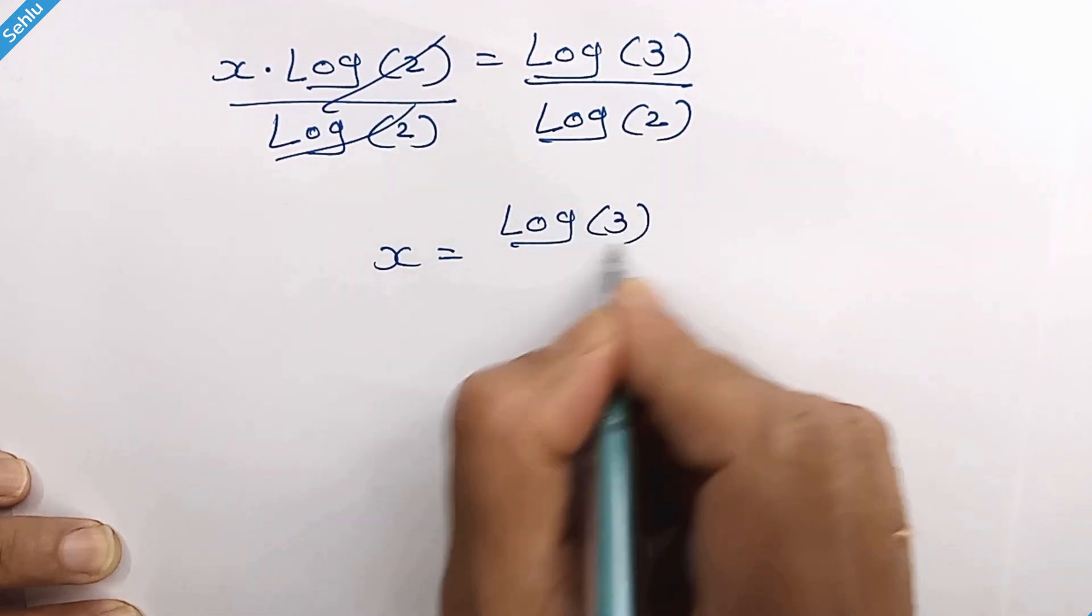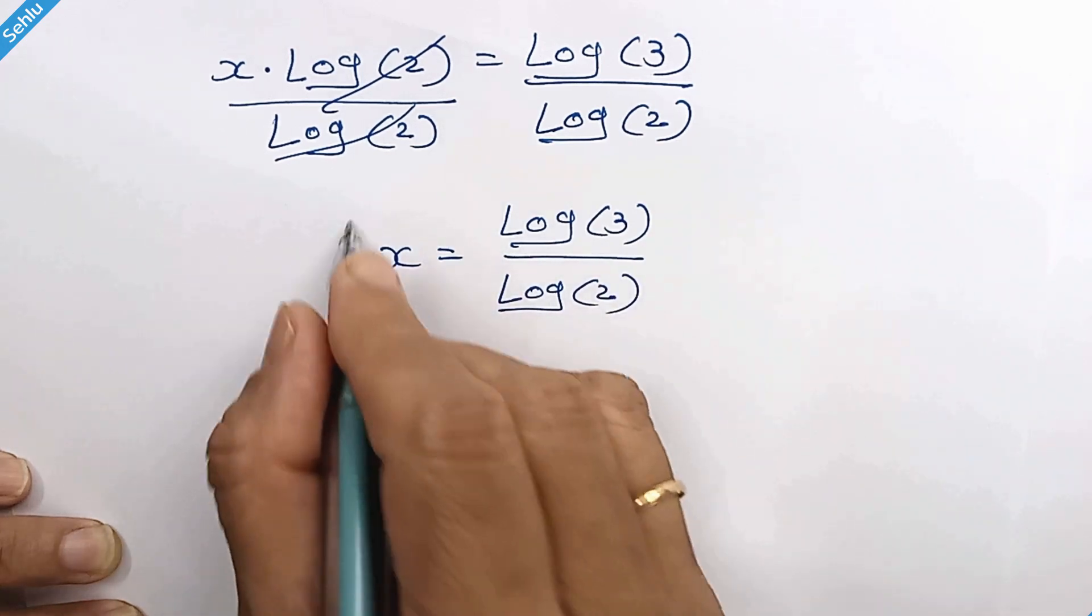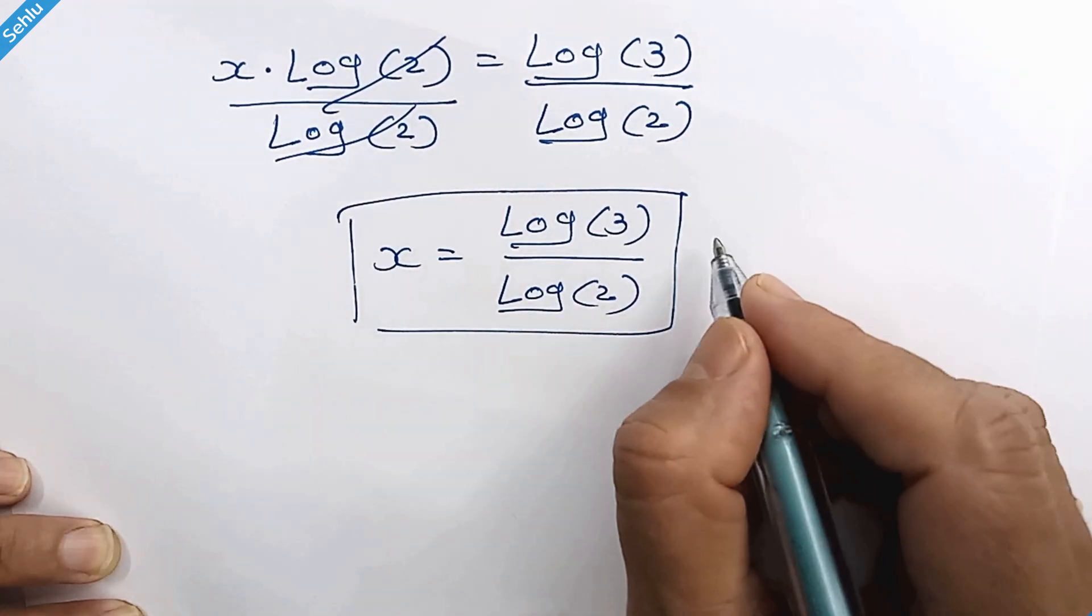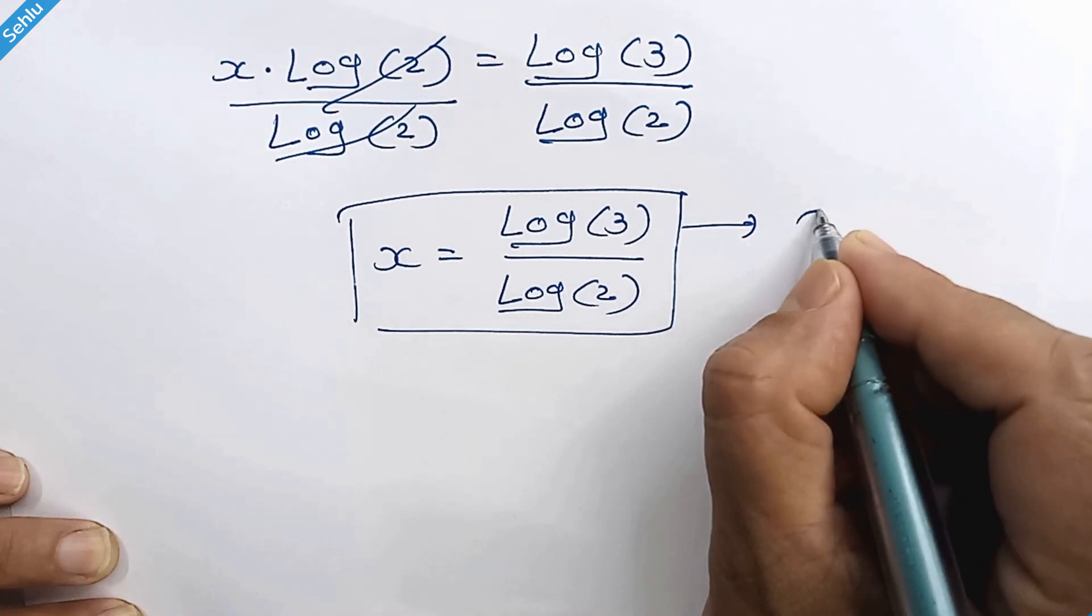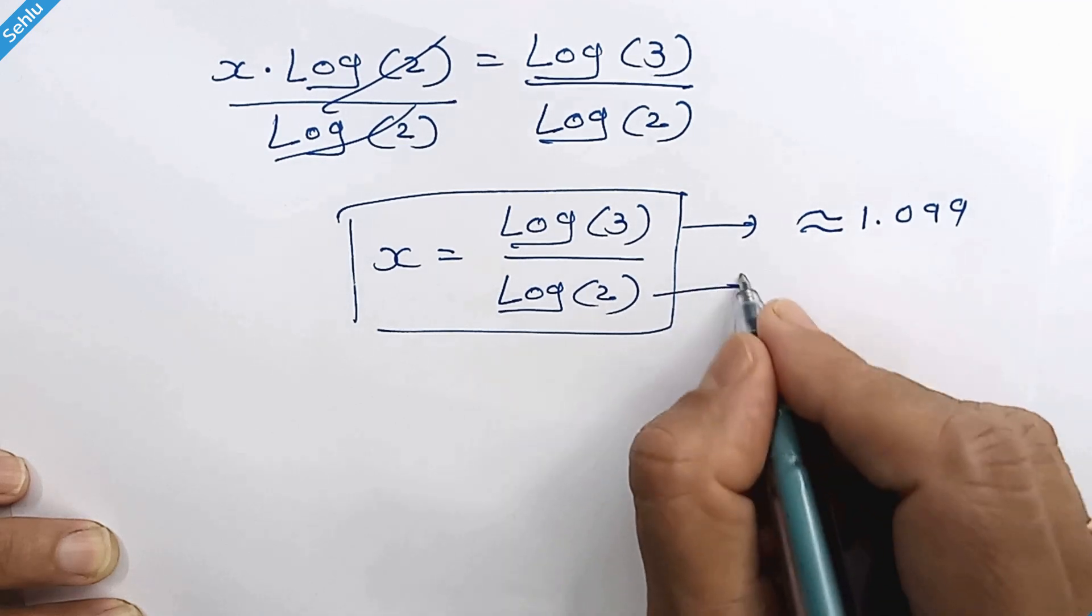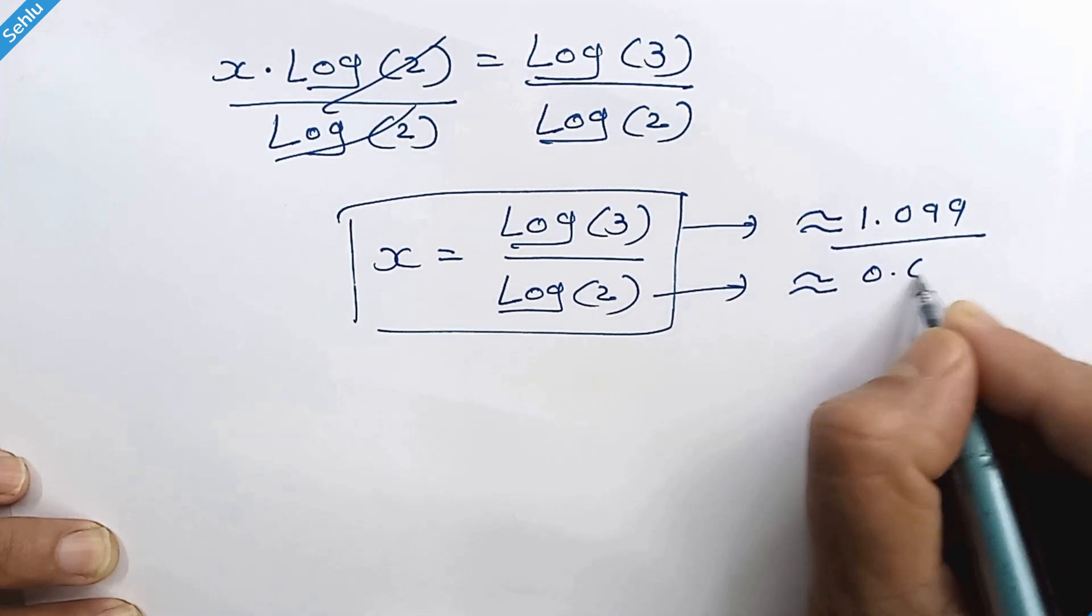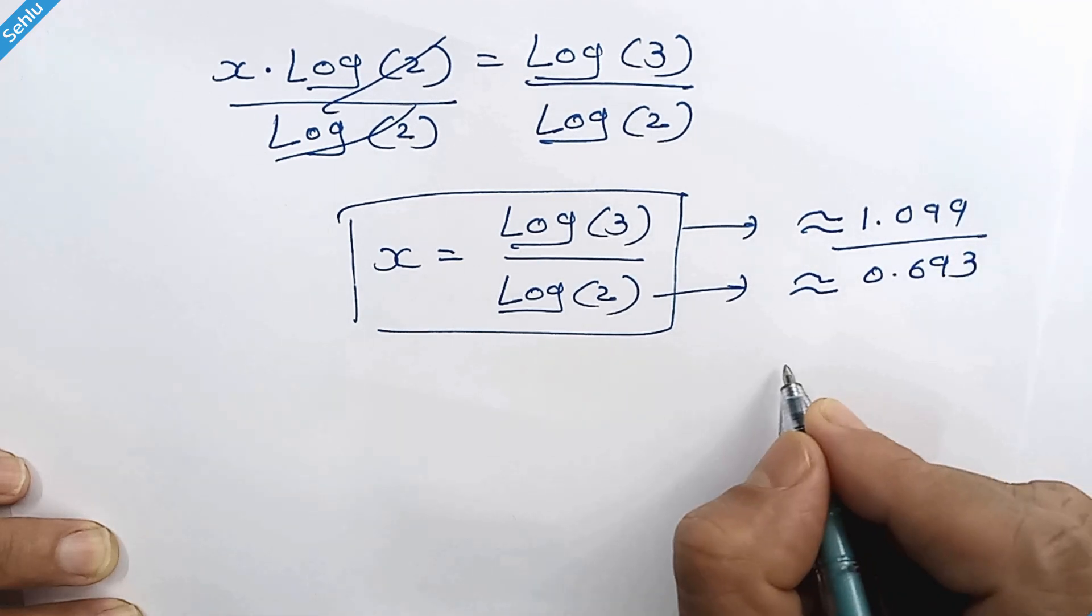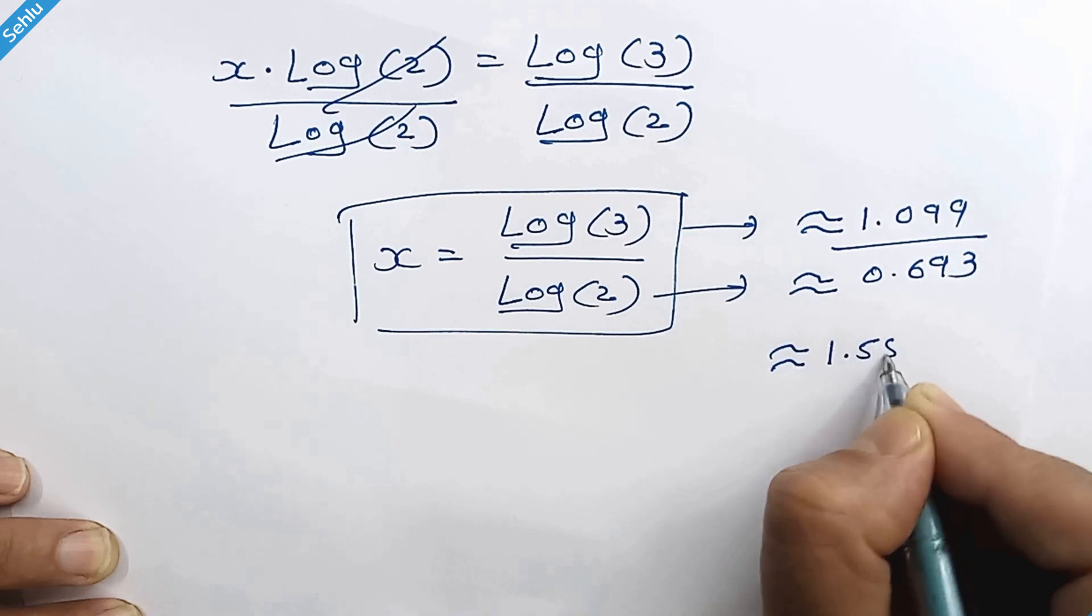log of 3 over log of 2, and this is the answer. An approximate value for log of 3 is 1.099 and log of 2 is 0.693, so it can be approximately 1.586.